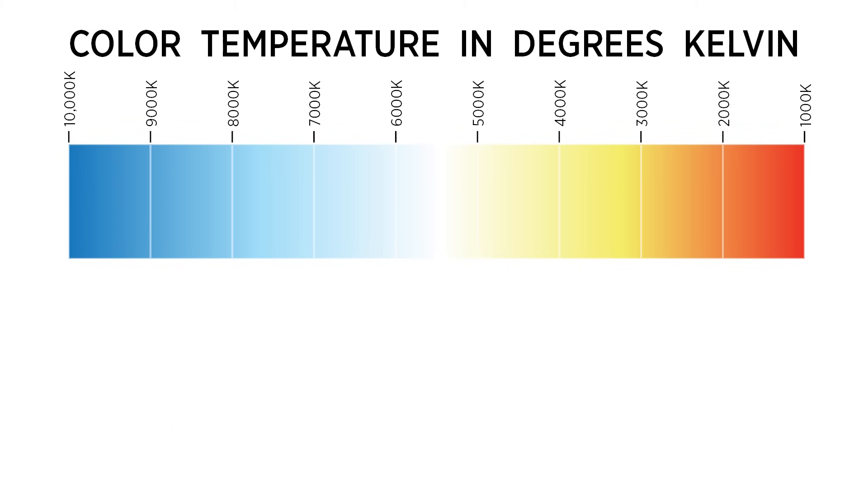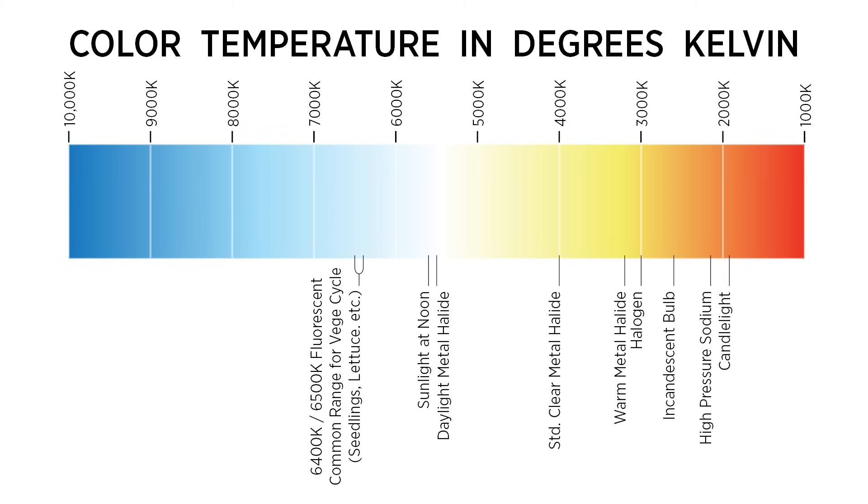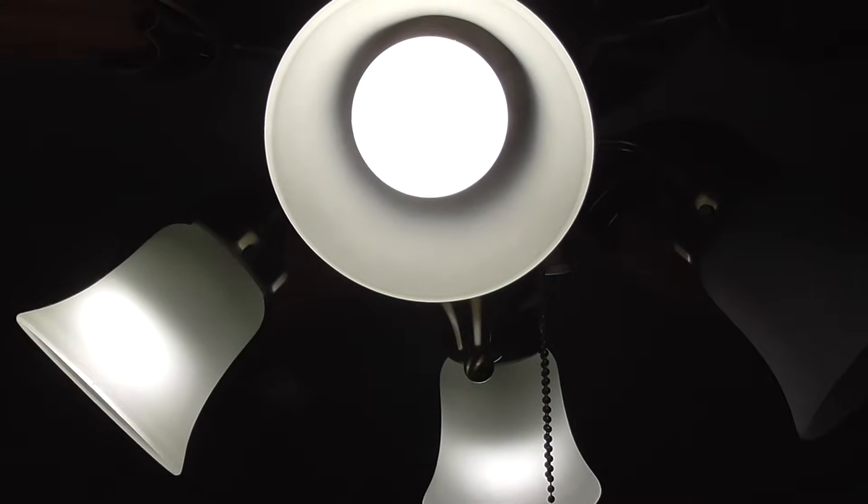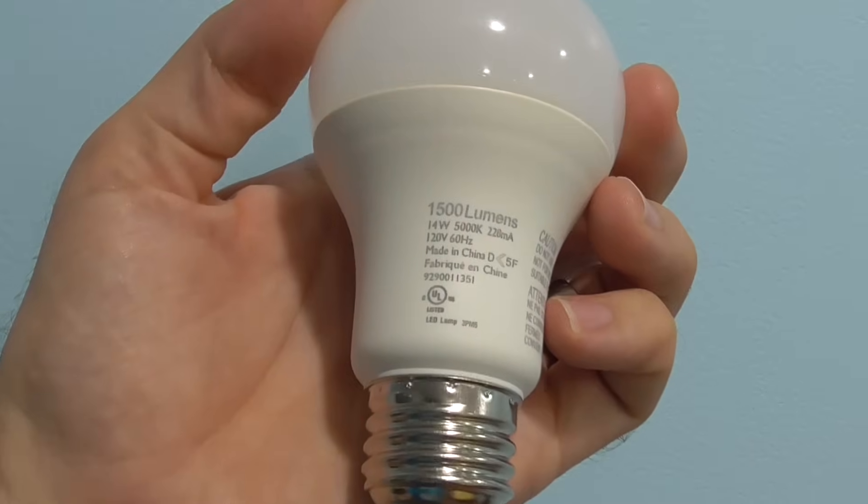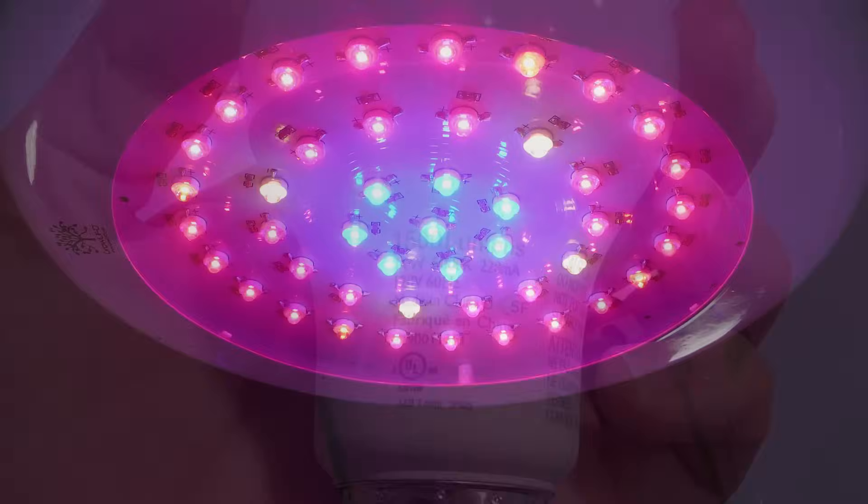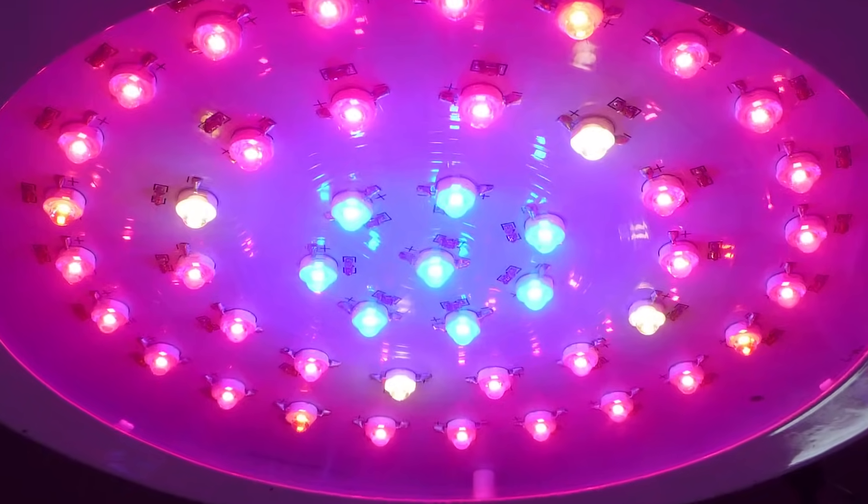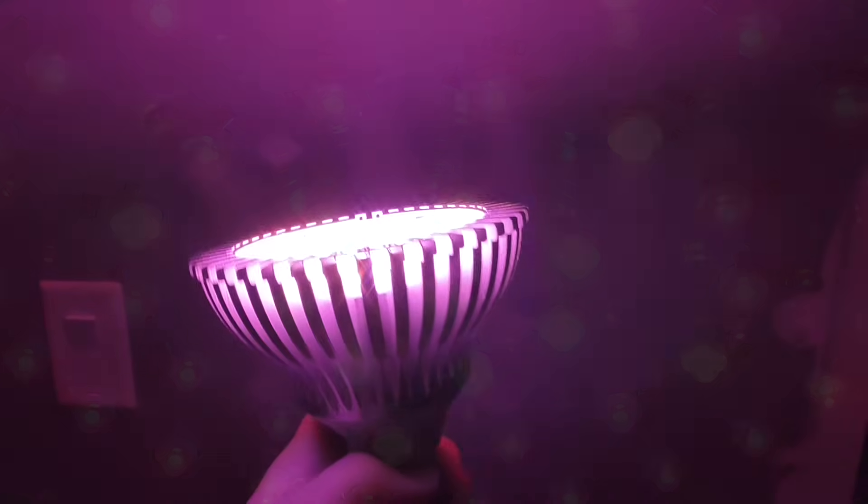You may be familiar with the Kelvin rating system, which is commonly used to describe the color characteristics of fluorescent lights. Lower numbers, like 2100K, have a warm amber hue, while cooler bulbs, like 6500K, are higher in blue light. With the widespread adoption of LEDs, we do see LEDs that use a Kelvin rating, but many plant grow lights do not.